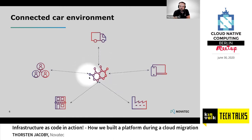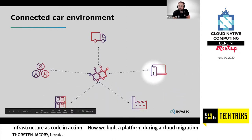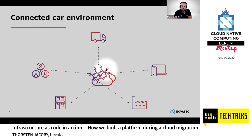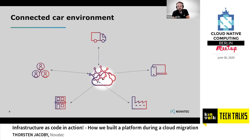Imagine the customer data center hosting all those applications, connected to plants, factories, car dealers, phones, and the cars themselves. For example, you can use your phone to tell your car to open the trunk or check the fuel level. It was clear that not all parts would migrate to the cloud — some old legacy systems would remain in the customer data center, requiring cloud-to-data-center connectivity.